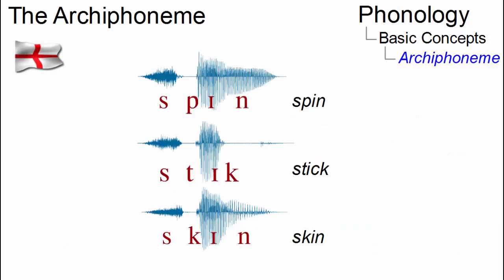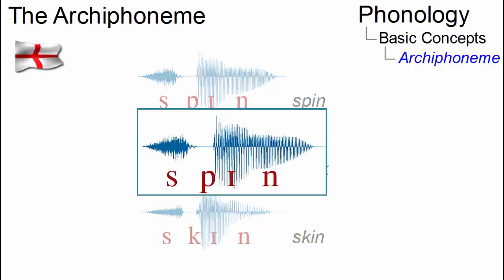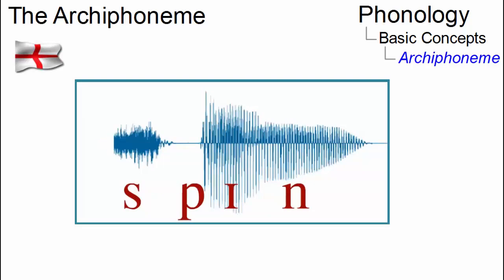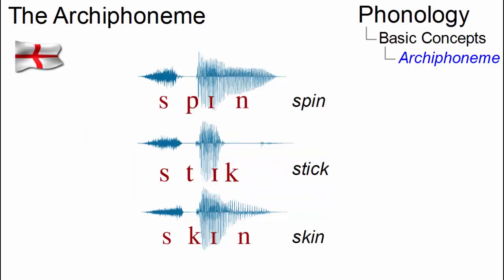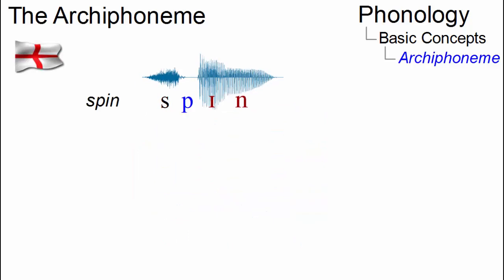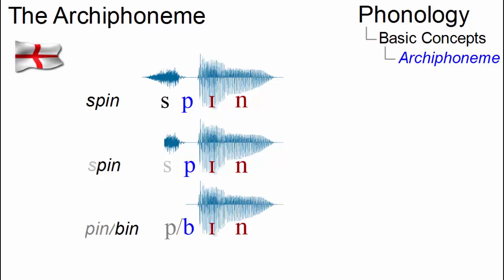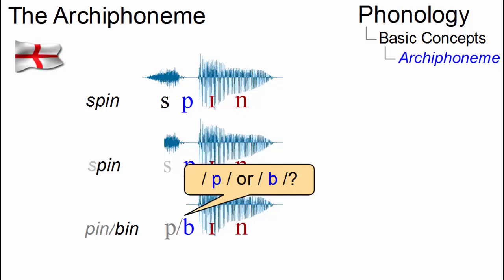Look at the following phenomenon. If we gradually cut off the initial fricative in words like spin, stick, or skin, the second phoneme loses its identity. What is normally regarded as a voiceless plosive consonant seems to become voiced — the more portions of the alveolar fricative are cut off. As a result, we cannot differentiate between a voiceless and a voiced plosive in this context anymore. The difference between them has been neutralized.